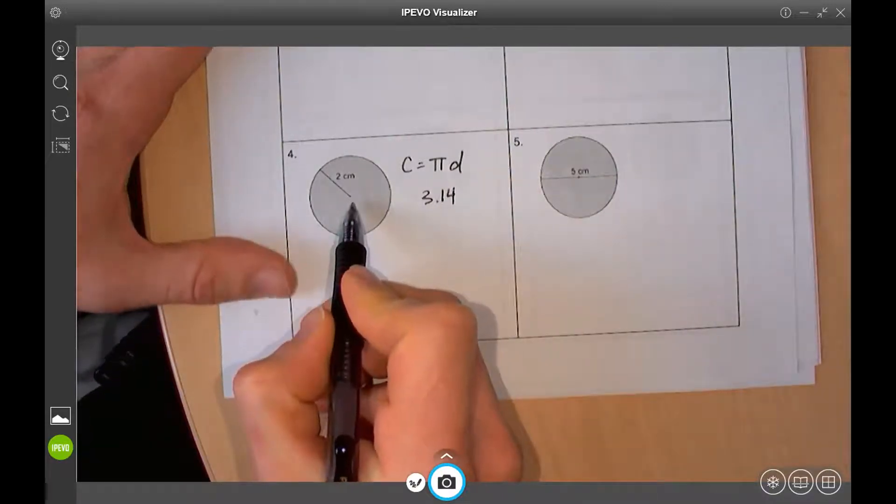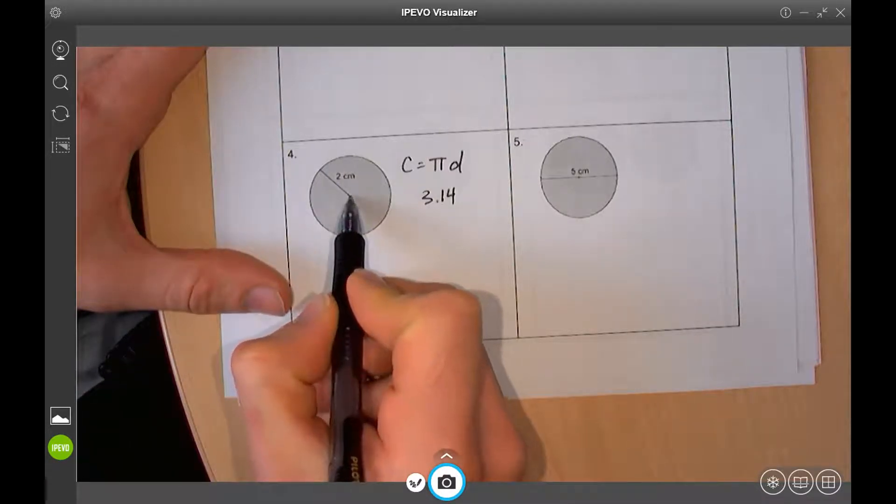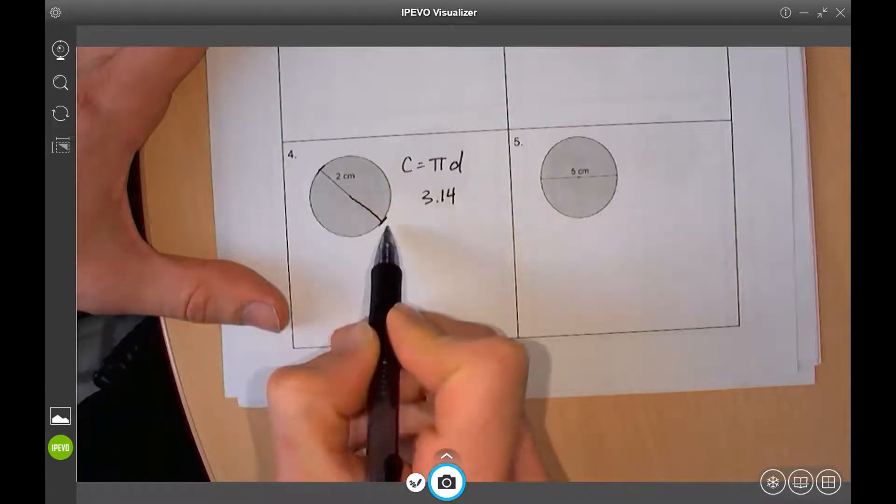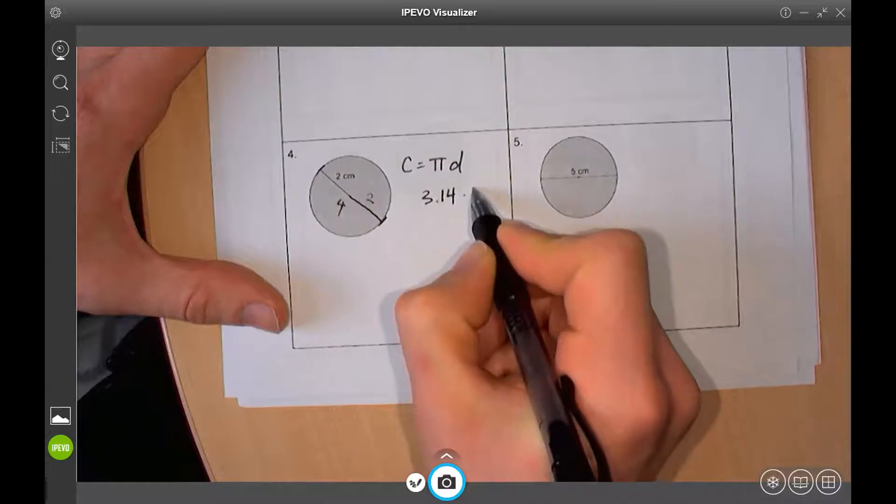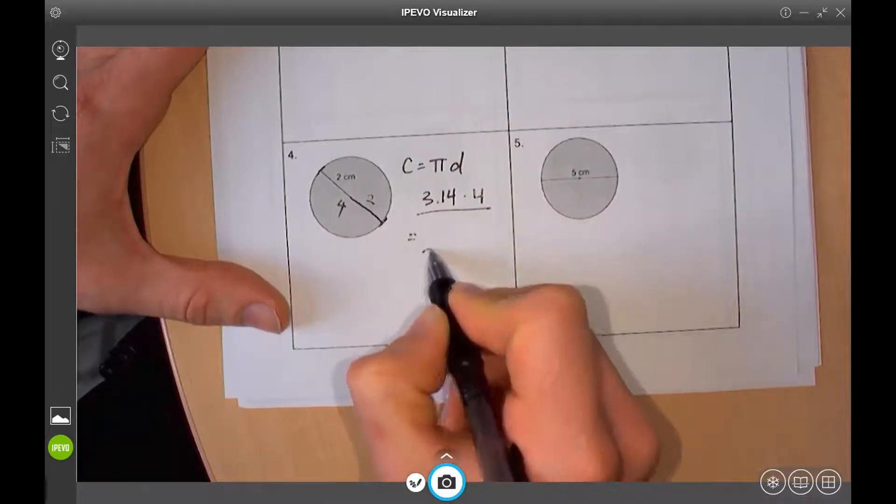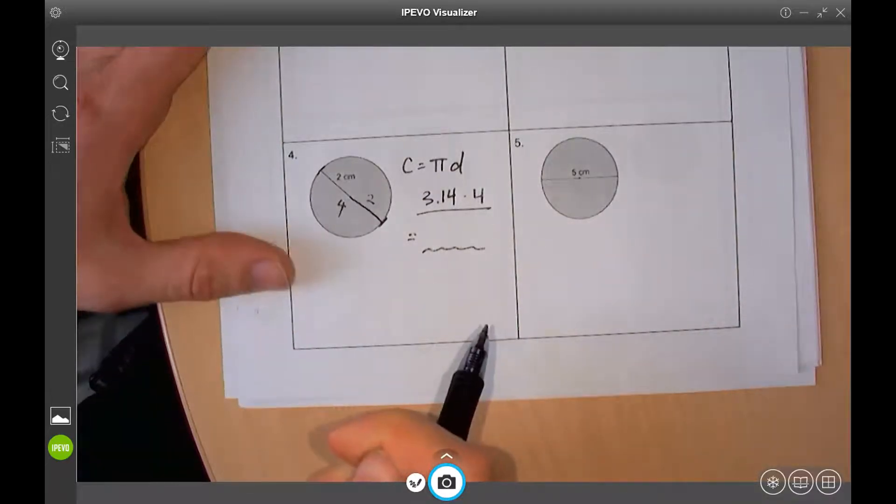Well, it only shows you 2. It shows you the radius. So, in order to get the diameter, you have to go all the way across. So, all the way across is 2 plus 2 would be 4. So, 3.14 times 4. So, you put that in your calculator. You're going to get the answer, and you put that answer into the response there.